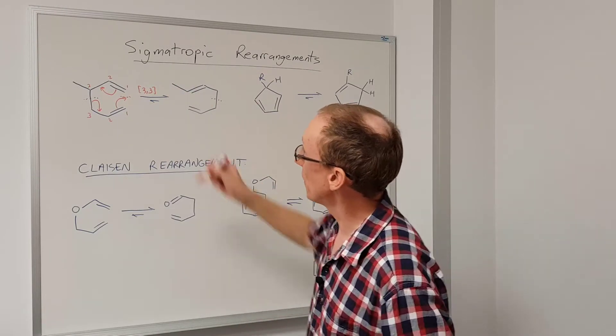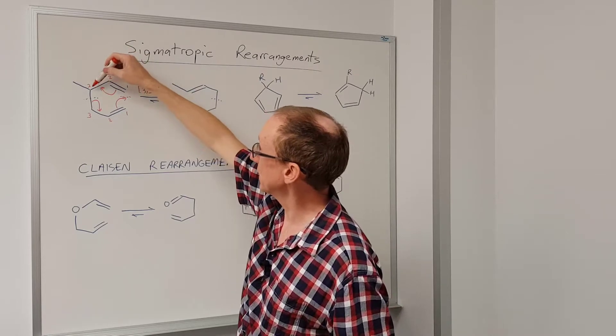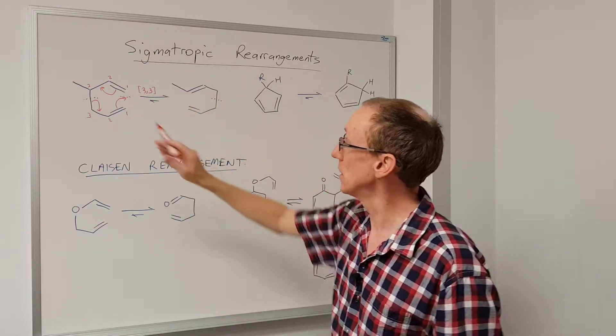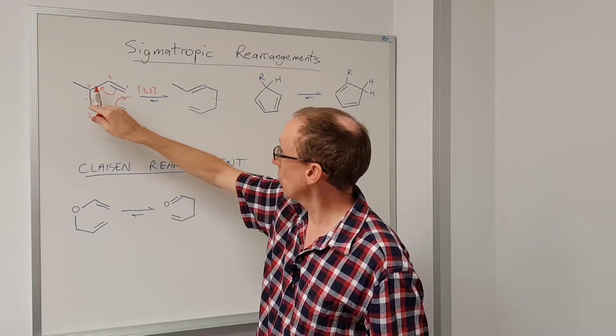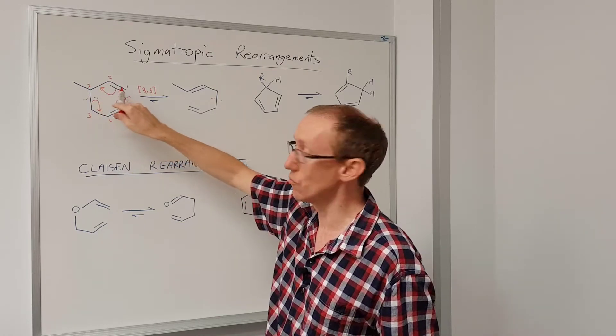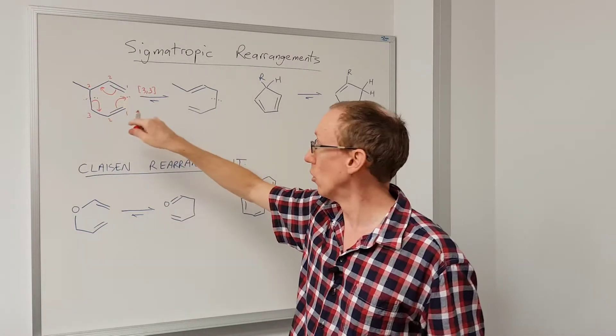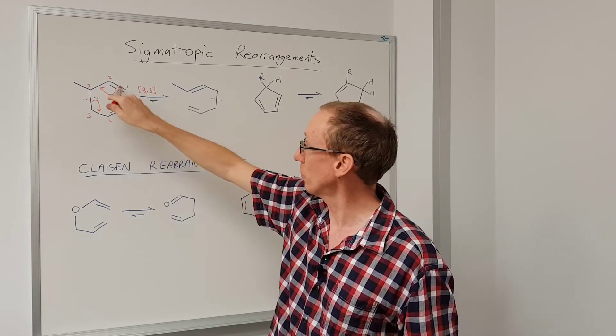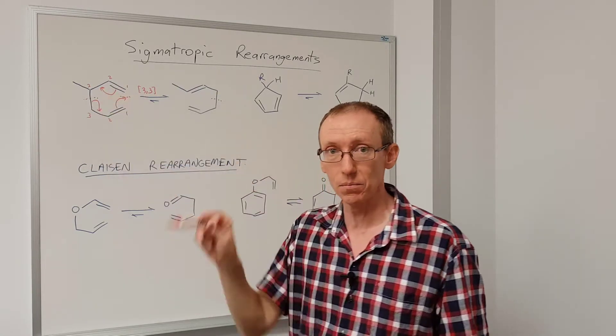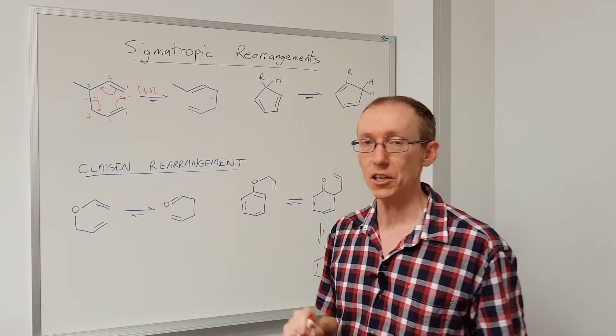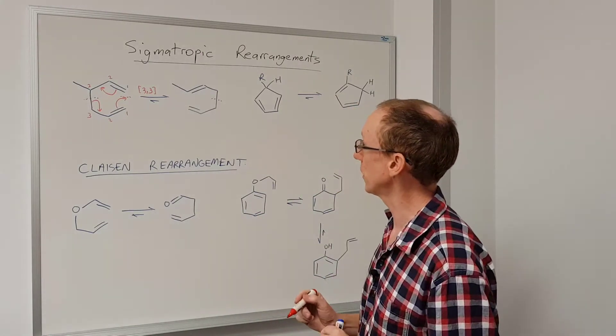Now it's important to note that this methyl group here doesn't get counted in the numbering because although it's attached to this group here, it's not part of the chain that's within the ring that forms the transition state. So it's not part of the contiguous set of atoms that are undergoing the reaction and involved in the transition state of this reaction.